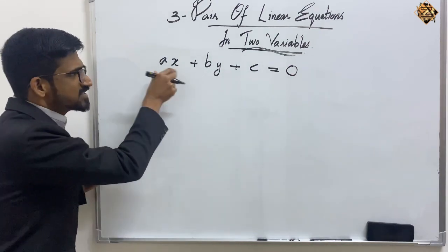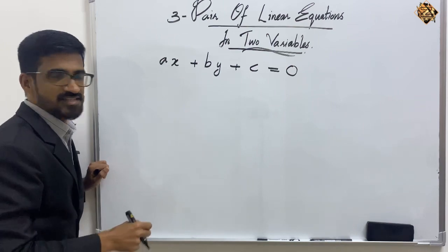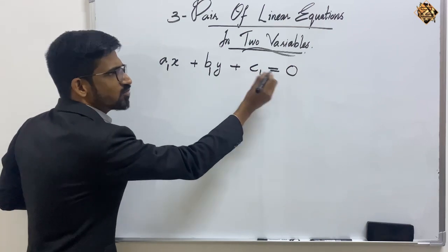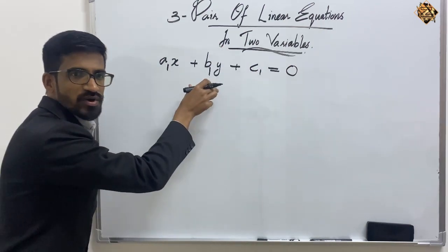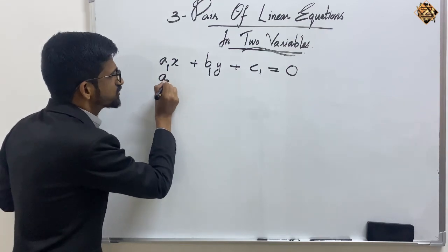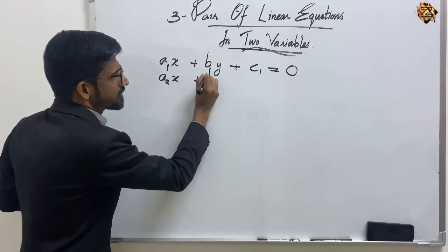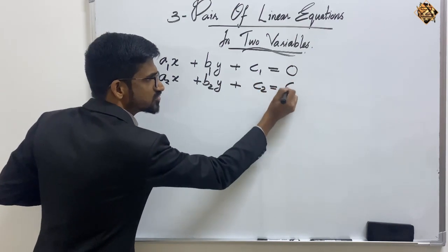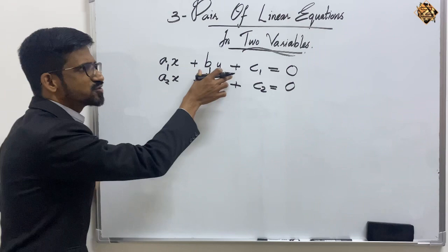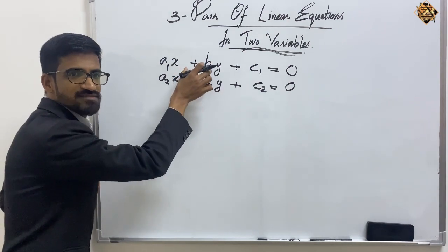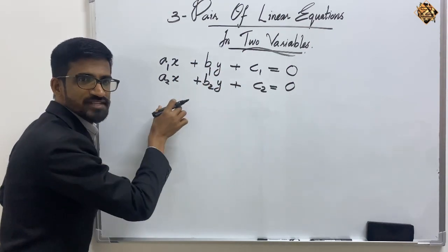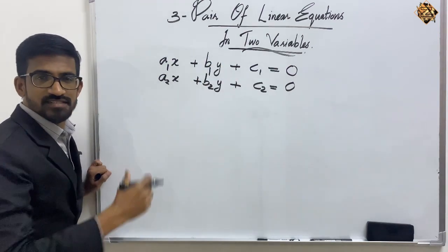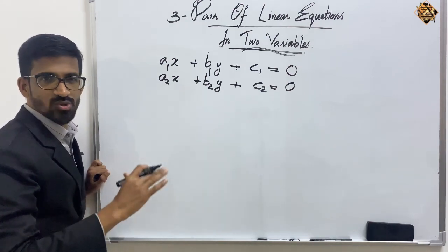Now in grade 10 we have a pair of linear equations in two variables. A pair means there will be two equations. We can represent them as: a₁x + b₁y + c₁ = 0 (first equation) and a₂x + b₂y + c₂ = 0 (second equation). We will learn how to solve these equations graphically as well as by algebraic method.